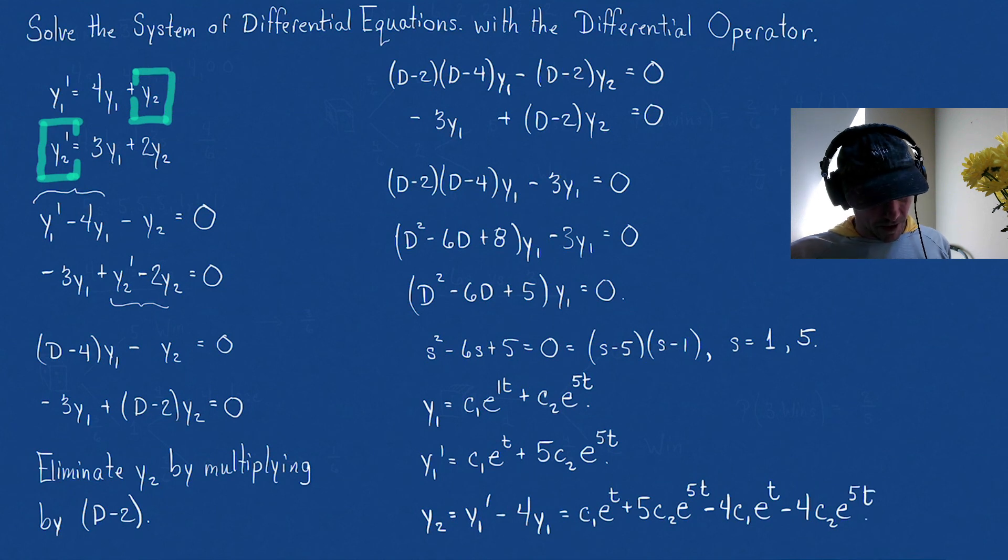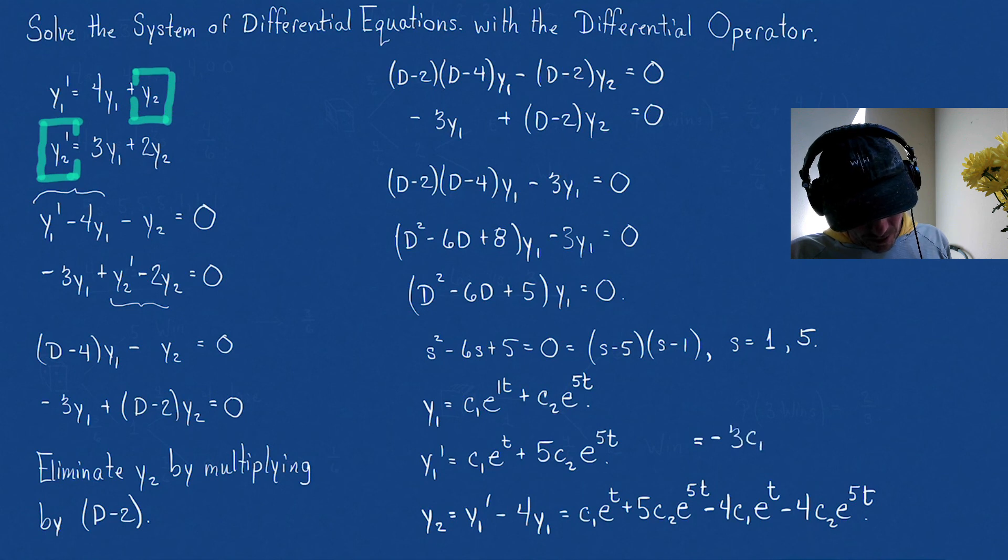And I think there we have it. If we combine our like terms, this is going to give me, I'm going to come up a little bit. This is going to give me -3c1e^t + c2e^(5t). And there is y2.